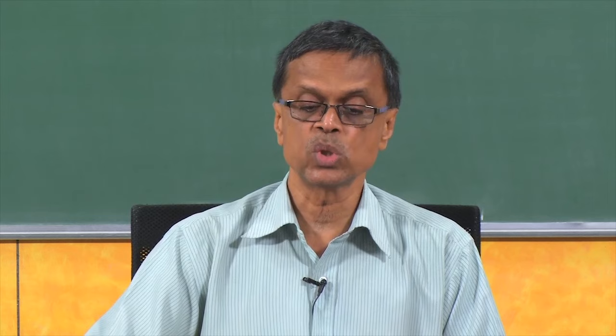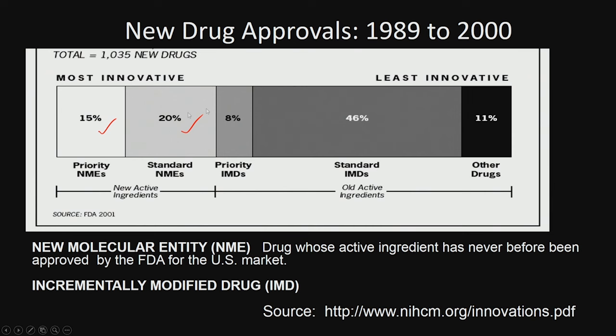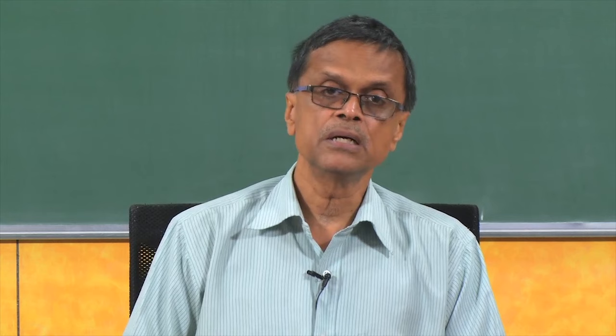That is called incremental. So most of it — incremental standard IMDs and priority IMDs — is almost 60-70%. You have an old active ingredient and make some modification, so there is not much invention, whereas new molecular entities are inventive, meaning totally new compounds. Only about 35% of drugs coming into FDA approval are new molecular species, whereas the rest are incremental improvements only.